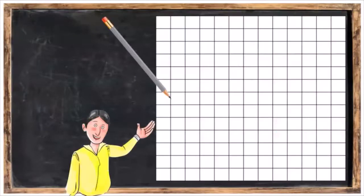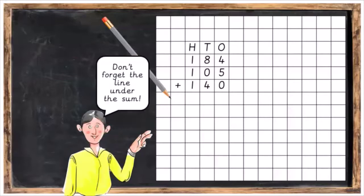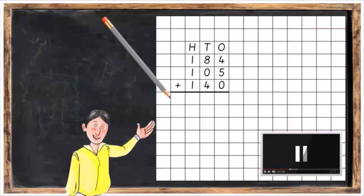Let's do an example together. I'd like you to write down this sum. We're going to put H, T and O for hundreds, tens and ones. Then we're going to write 184 plus 105 plus 140. Don't forget to put the line under the sum. Press pause and when you've got that done, press play again.